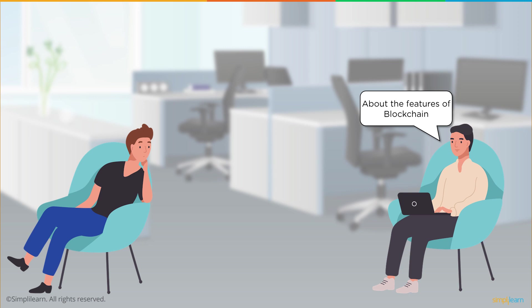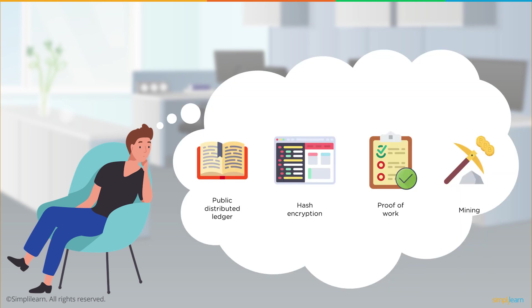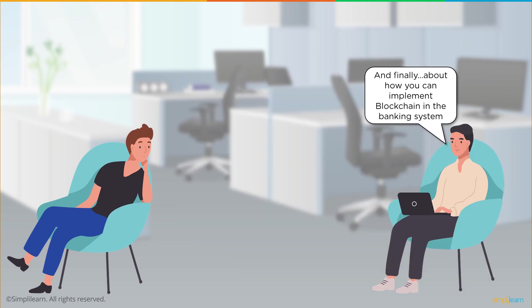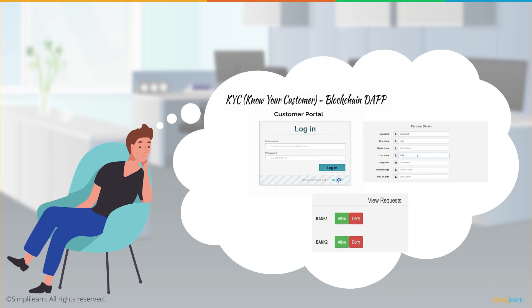Blockchain's key features include: it's a public distributed ledger, it uses hashing encryption to encrypt all information, it uses a proof of work consensus algorithm, and it works with a concept of mining to reward miners for maintaining the sanity of the network. Finally, we talked about how to implement a KYC-based blockchain decentralized app, allowing a KYC done by one bank to be leveraged by another, so customers don't need multiple KYC iterations.